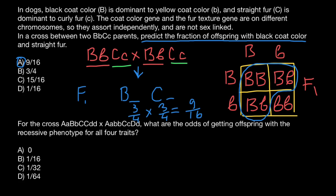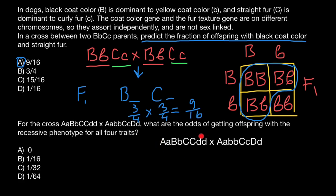Now let's move to the second question. For the cross of the following parental genotypes, what are the odds of getting offspring with the recessive phenotype for all four traits? We have parent one and parent two. They each carry gene A, gene B, gene C, and gene D — four genes total. The question asks what is the probability that in the following generation, all four traits show recessive phenotype.